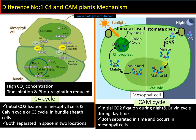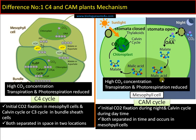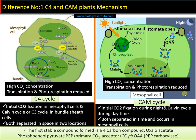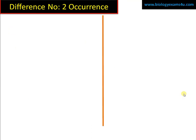So initial carbon dioxide fixation and Calvin cycle are separated in time. Both occur in mesophyll cells — a single type of cell — but at two different times: at night and during daytime. This maintains high carbon dioxide concentration, ensuring Calvin cycle proceeds without the effect of photorespiration, and water loss by transpiration is completely avoided. As similarities: in both cycles, the first stable compound is a C4 compound oxaloacetate, phosphoenolpyruvate is the primary carbon dioxide acceptor, and the enzyme for initial carbon dioxide fixation is PEP carboxylase.